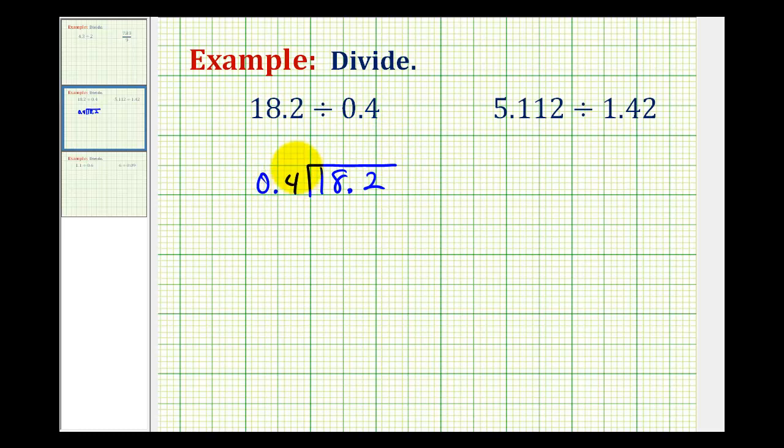Now we saw in the previous video that dividing a decimal by a whole number is a pretty straightforward process. We move the decimal point up into the quotient and then we divide as we normally would. Now the reason I mention that is what we're going to do is manipulate this to make our divisor a whole number.